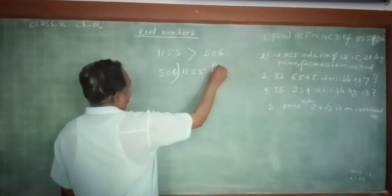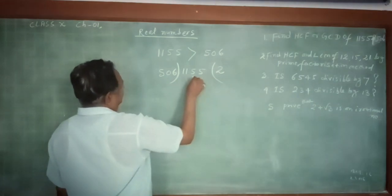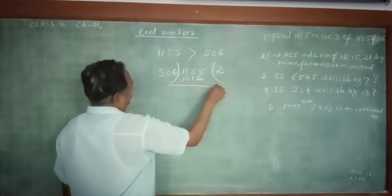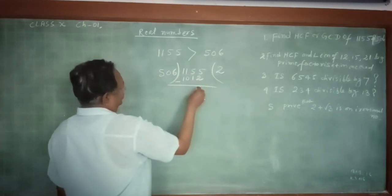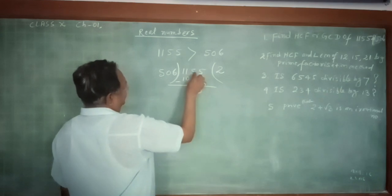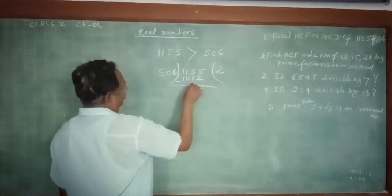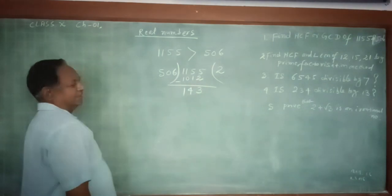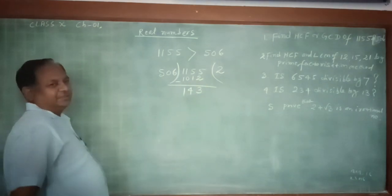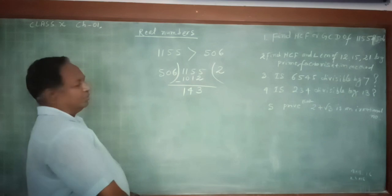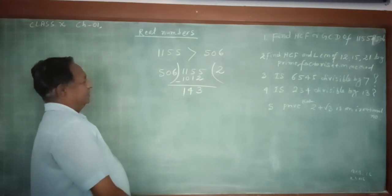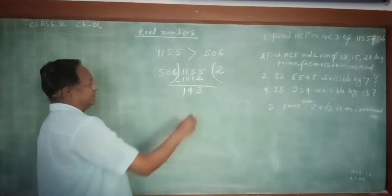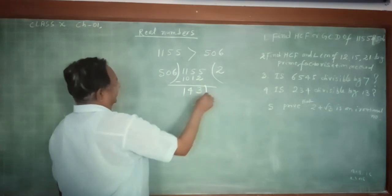506 goes into 1155 two times. 2 times 506 is 1012. Subtracting: 1155 minus 1012 gives remainder 143. Since remainder is not equal to 0, take this remainder as a new divisor.